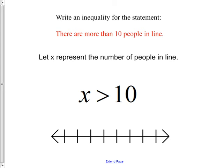You can check yourself by flipping to the next couple of pages in the SmartBoard presentation. Is it an open or closed circle? Well, can it equal 10? No — so it's an open circle. If you fill something in, it means it can be that value. You definitely want the open circle and you definitely want to shade to the right. If I change it to 'or equal to 10,' all I do is fill in the circle.